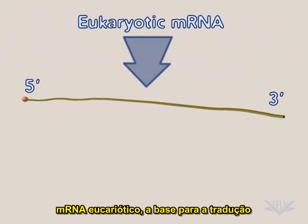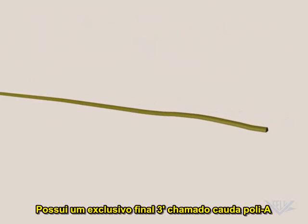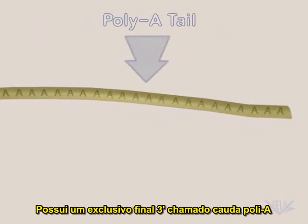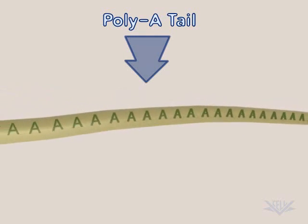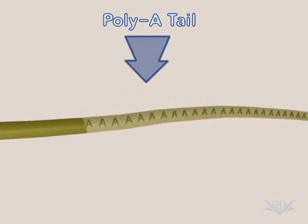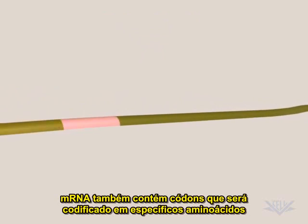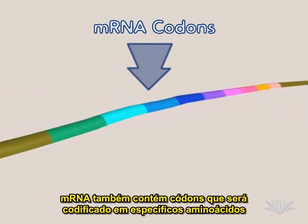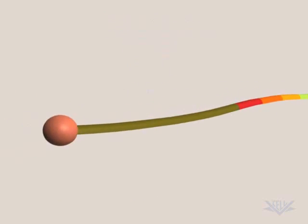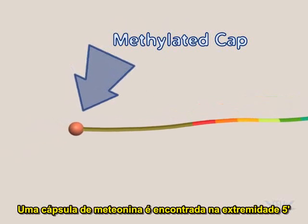Eukaryotic mRNA, the substrate for translation, has a unique 3' end called the poly-A tail. mRNA also contains codons that will encode for specific amino acids. A methylated cap is found at the 5' end.